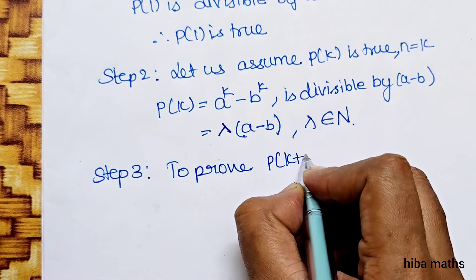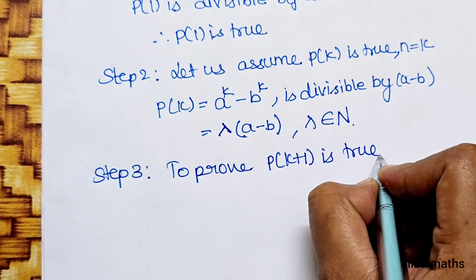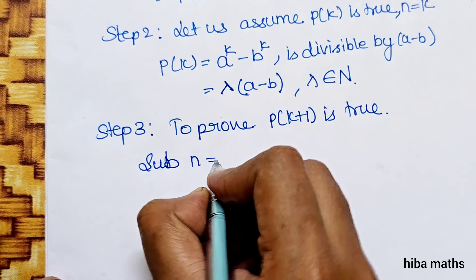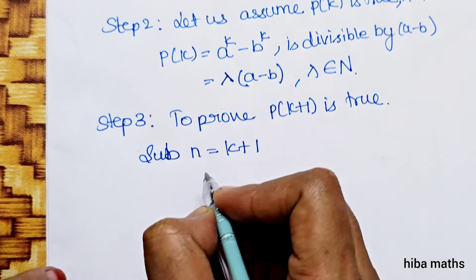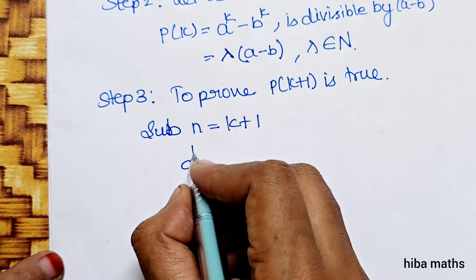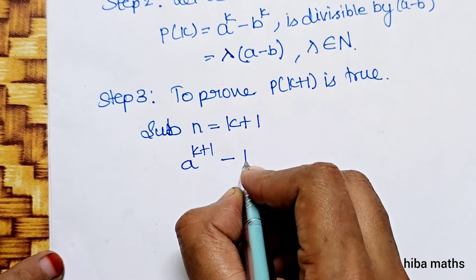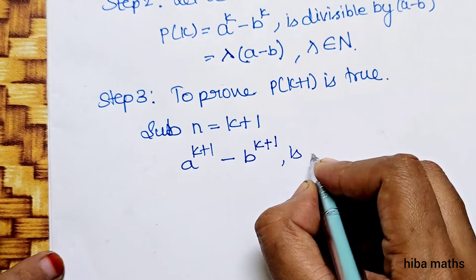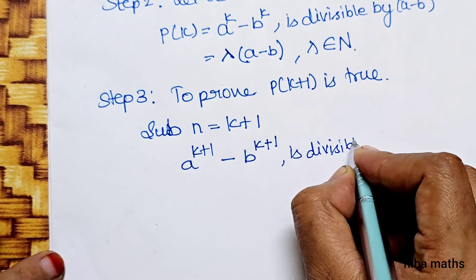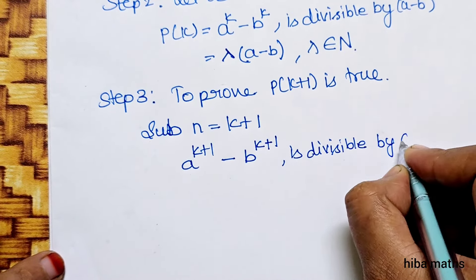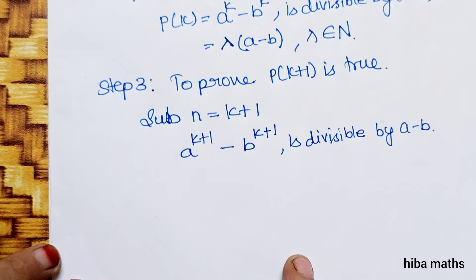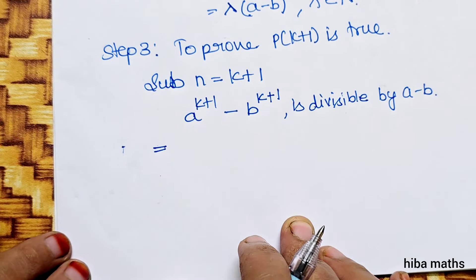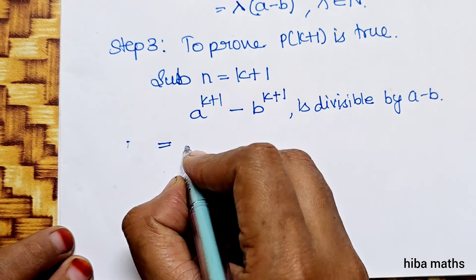To prove P(k+1) is true. We substitute n equal to k plus 1. The statement becomes: a power (k+1) minus b power (k+1) is divisible by (a minus b). Now we consider the LHS.